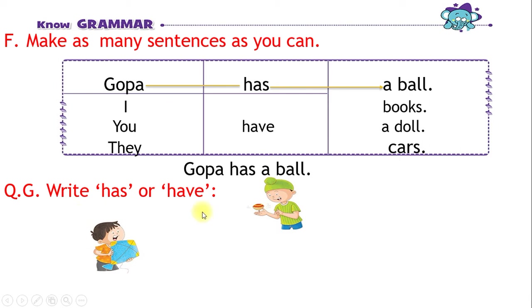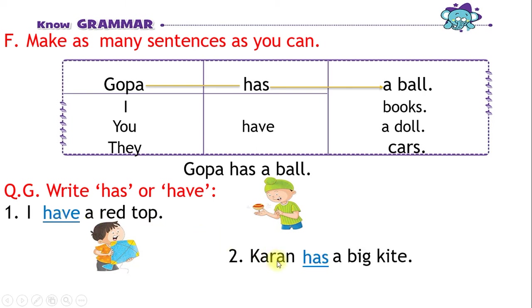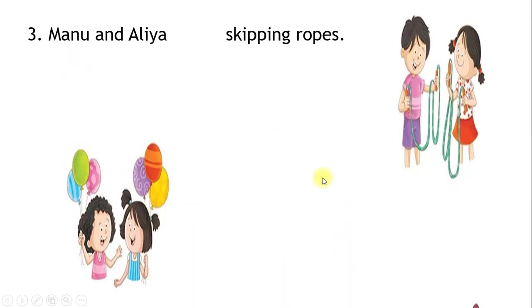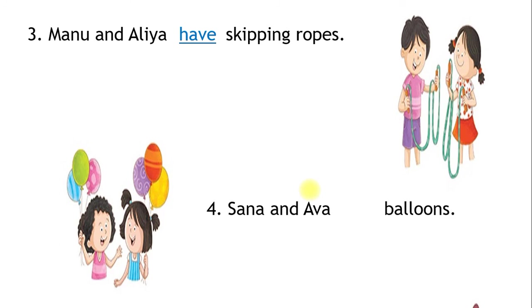Write has or have. I have a red top. Karan has a big kite. Manu and Alia have skipping ropes. Sana and Awa have balloons.